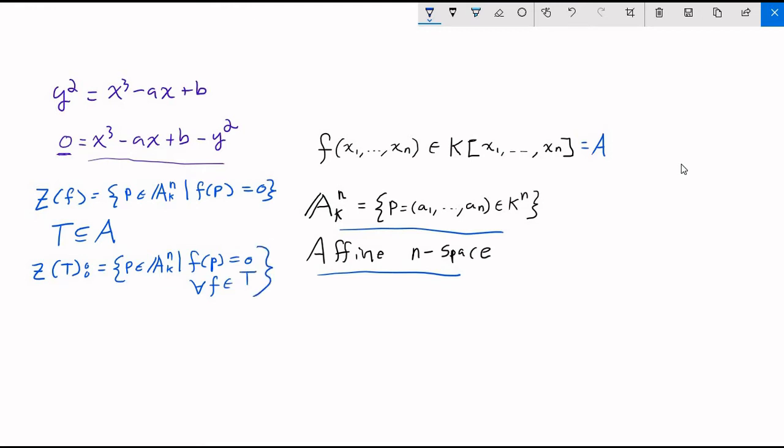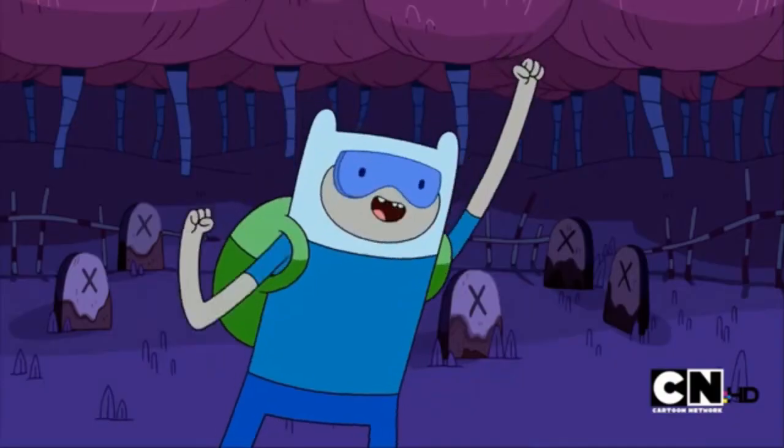So if there's no common zeros for two polynomials in t, then this set's actually going to be empty. And if we have some subset of affine n-space, and it happens to be equal to some z of t, then we're going to call this set algebraic.